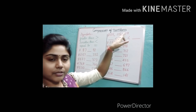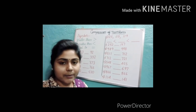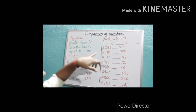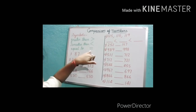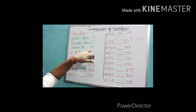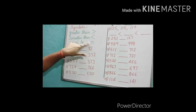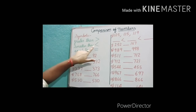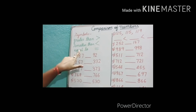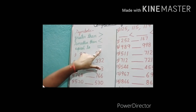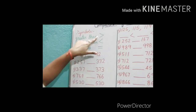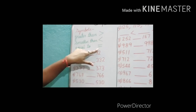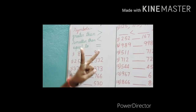I think you have already read in standard one about the comparison of numbers. Can you tell me what are these signs? Yes, you know them very well. These are all symbols. First one: greater than. Second one: smaller than. And third one: equal to. These three symbols we are using to compare two numbers.